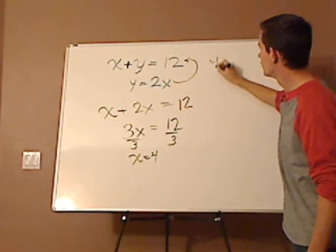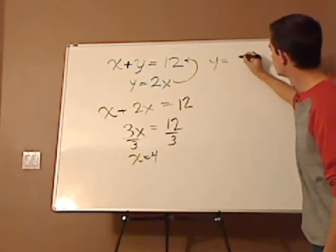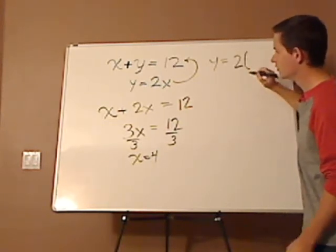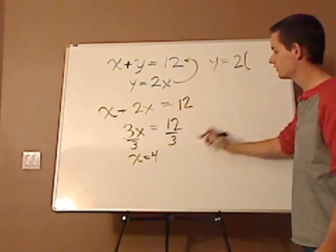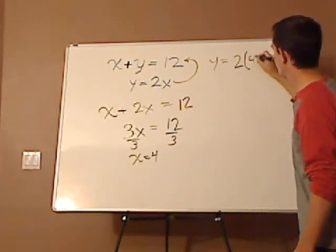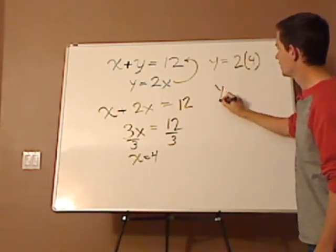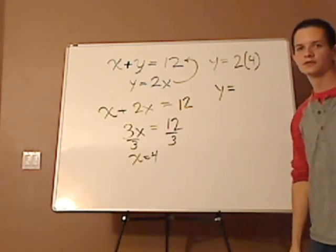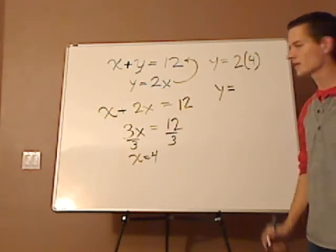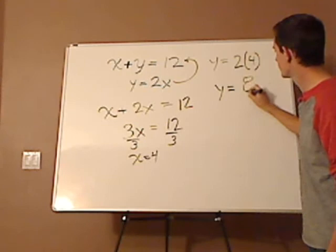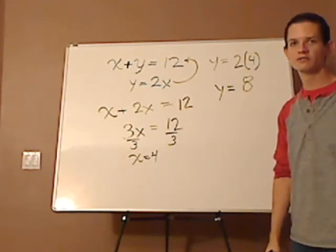So you have Y equals 2, and you're replacing the X with 4, because you just found it. And so what's 2 times 4? 8. So Y equals 8.